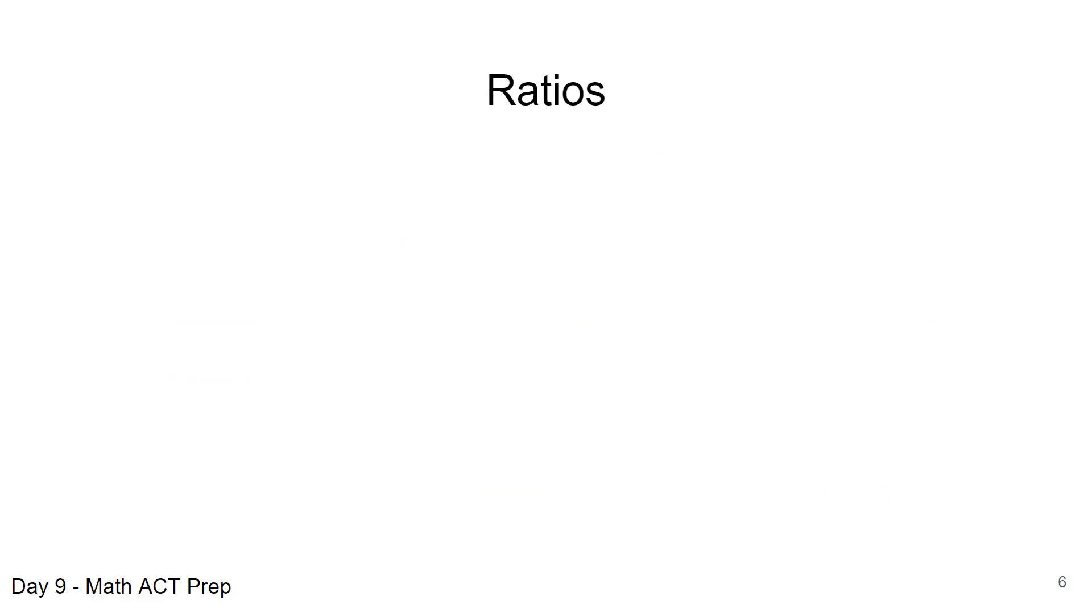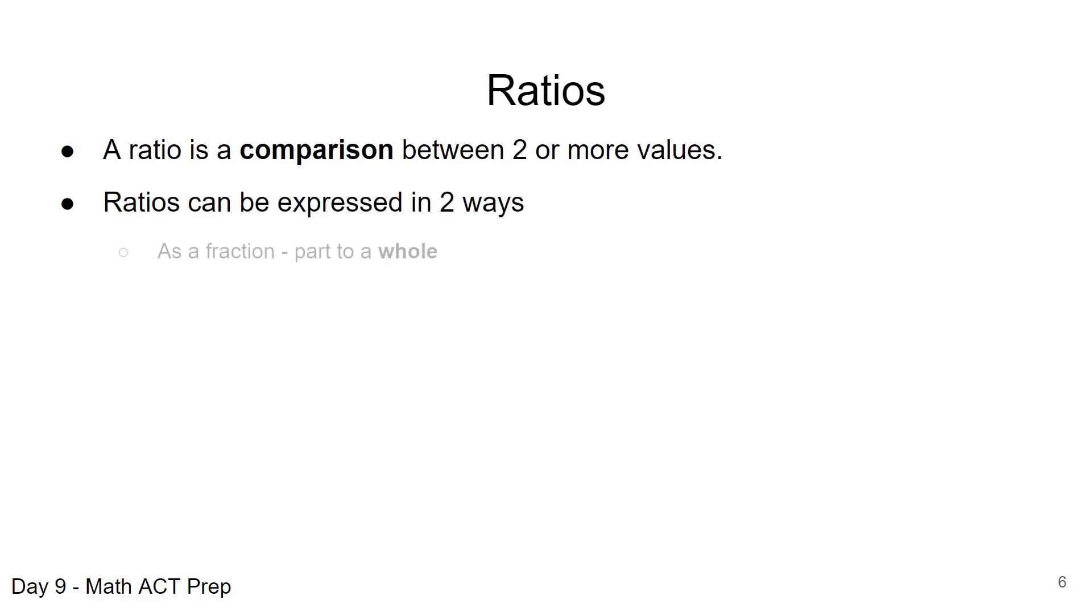Now let's take a look at ratios and what we mean by a ratio is that is a comparison between two or more values. We can express ratios in two different ways: as a fraction, and again we're talking about part to a whole, or we could use a colon or the word TO. This is a part to a part, so the two different ways we can express them.